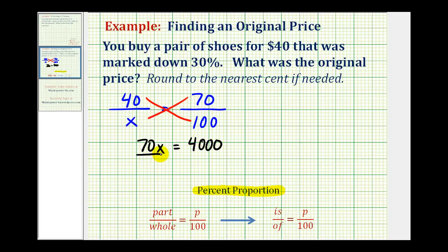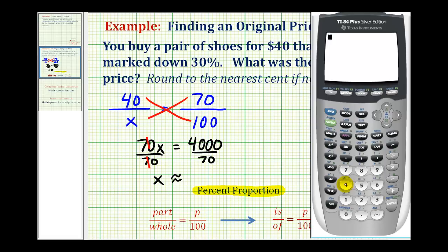Divide both sides by 70 to solve for x. x will be the original price of the shoes. It does say round to the nearest cent, so now we'll go to the calculator. 4,000 divided by 70. The original price was approximately $57.14.